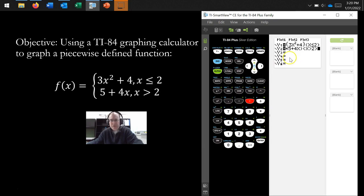So now that we've entered the information, just click on graph. So notice that you don't see the other part because we need to adjust the window scale. So, since if I let x be equal to 2, this is going to give us 3 times 4, that's going to give us 12 plus 4. That will give us 16.